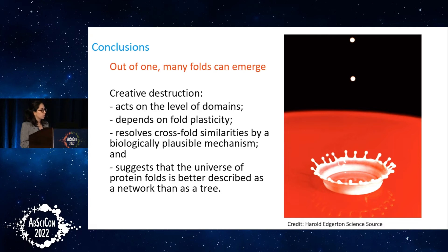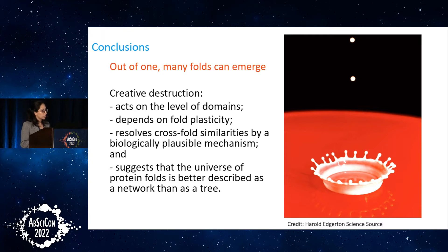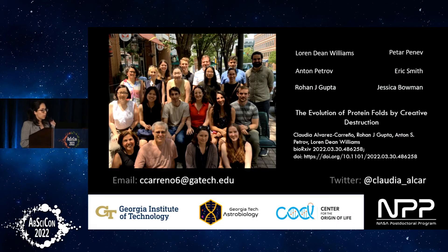Creative destruction acts on the level of domains, depends on fold plasticity, and resolves cross-fold similarities by a biologically plausible mechanism, suggesting that the universe of protein folds is better described as a network than as a tree. This example is actually of a protein present in humans — this PDB code comes from a sequence that very recently underwent creative destruction. Thank you.